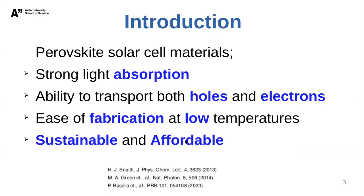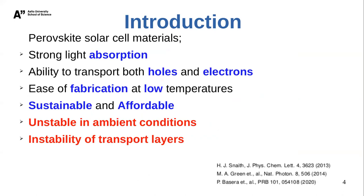However, despite all these properties, the commercialization of perovskite has not been realized yet. This is due to stability issues — mainly, perovskite is not stable in ambient conditions. We also have problems with transport layers. The most common transport layer, which has given perovskite its current efficiency, is Spiro-OMeTAD, a hole transport material. But this material is an organic compound and is very unstable in a UV environment. So in order to achieve commercialization, we need to enhance stability without compromising efficiency.